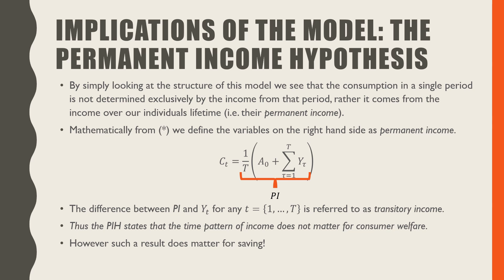The difference between the permanent income PI and Y_t, the actual labor flow for any t, is referred to as transitory income. Thus, the permanent income hypothesis states that the time pattern of income does not matter for consumer welfare. However, this result shows the time pattern of income matters for saving.